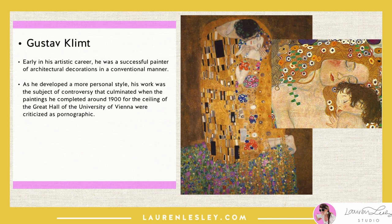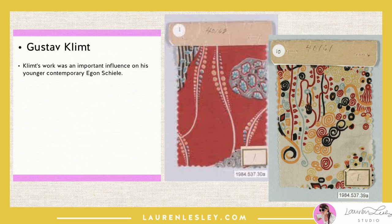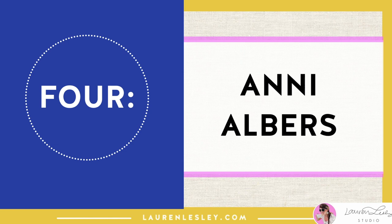Early in his artistic career he was a successful painter of architectural decorations in a conventional manner. As he developed a more personal style, his work was the subject of controversy that culminated when the paintings he completed around 1900 for the ceiling of the Great Hall of the University of Vienna were criticized as pornographic. He subsequently accepted no more public commissions but achieved new success with the paintings of his golden phase, many of which include gold leaf. Klimt's work was an important influence on his younger contemporary Egon Schiele, and here you can see a lot more of his patterns and decorative work used throughout his paintings as well.